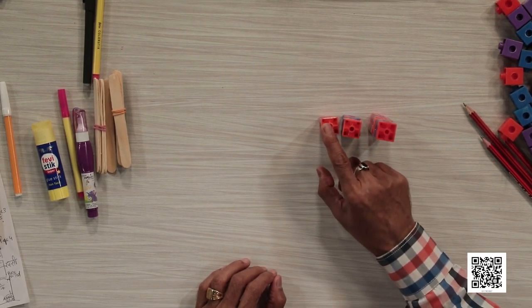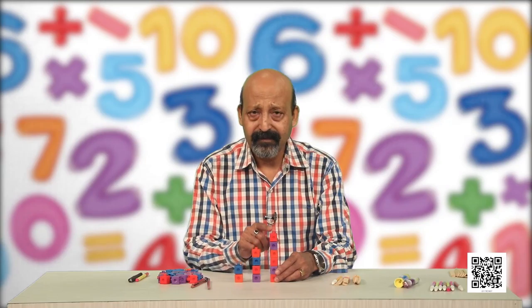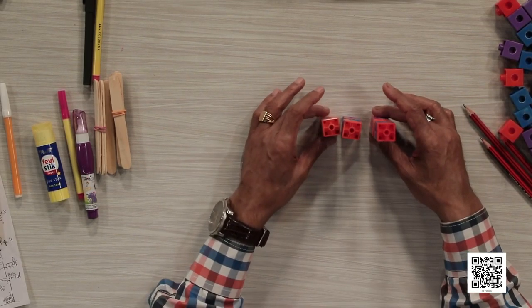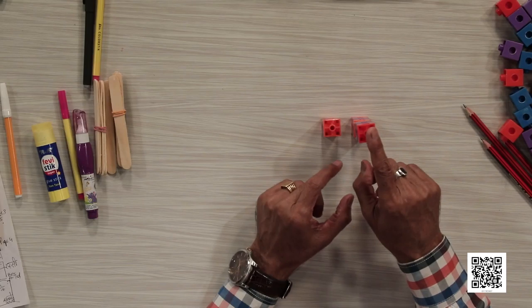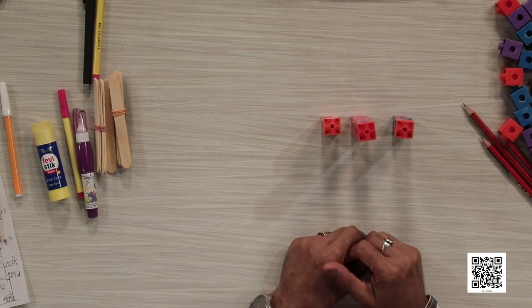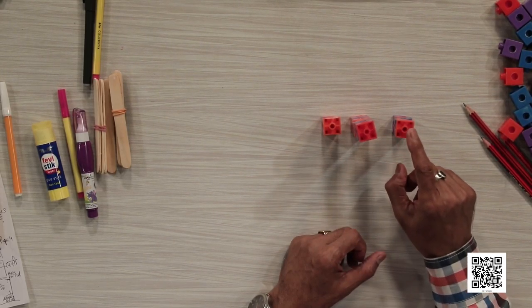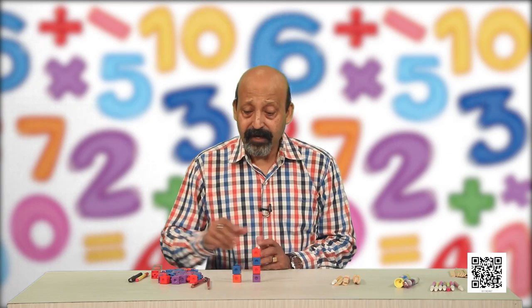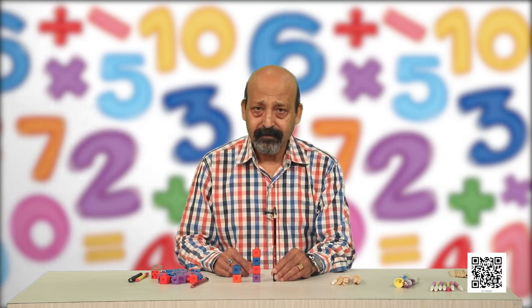We use longer and shorter, but when objects are standing upright, we call them taller and shorter. This pillar of blocks is tallest, this is the middle one, and this is shortest. If we are having only two, we say one is taller and the other is shorter. Can you tell me which is taller and which is shorter?